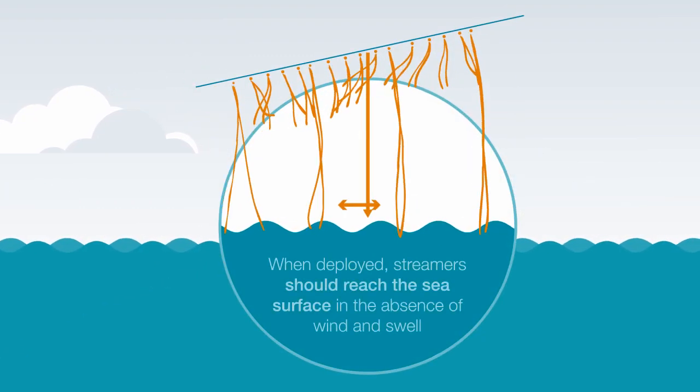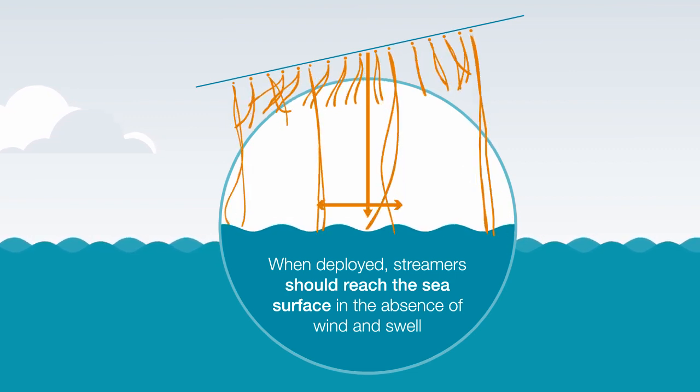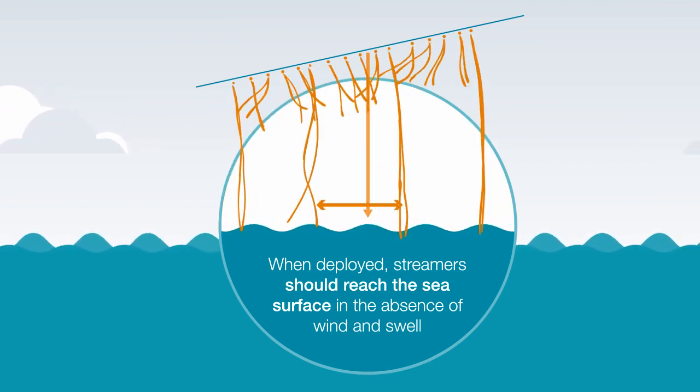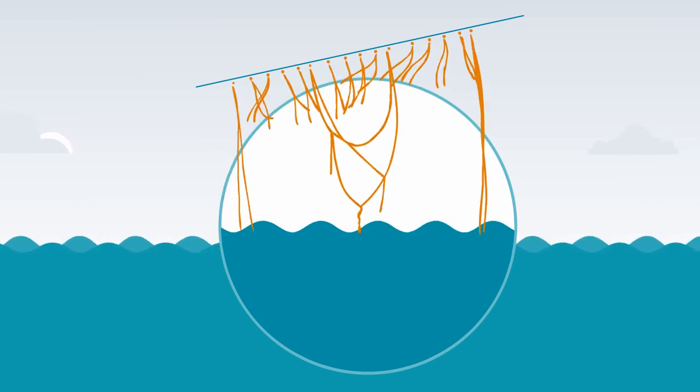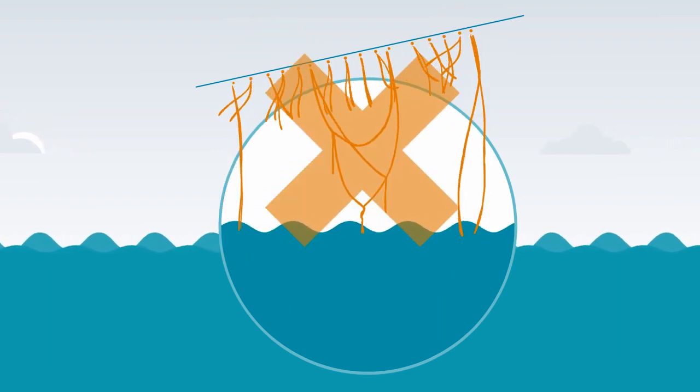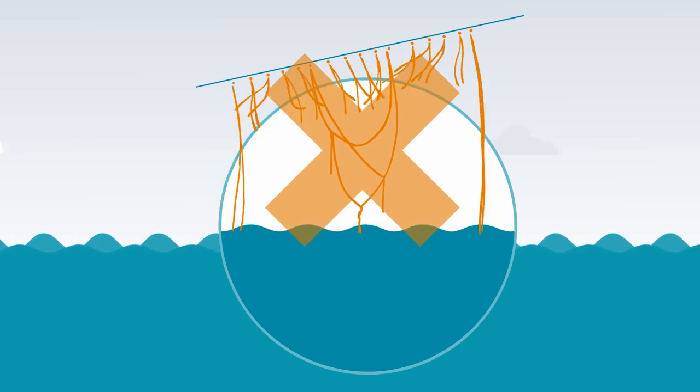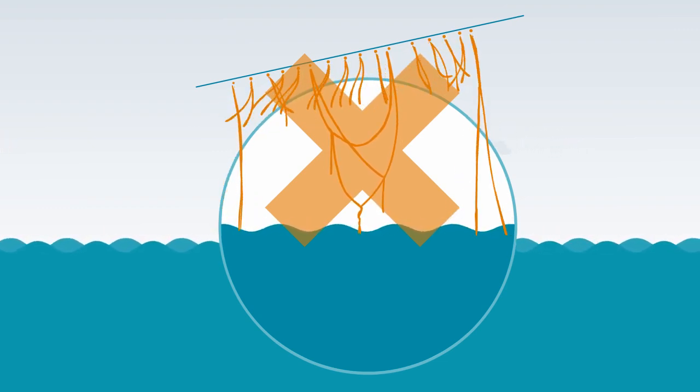The length and spacing of streamers are important factors in keeping seabirds away from fishing gear. Streamers should not become tangled, either with each other or the tory line. Attaching streamers to the tory line by a swivel allows free movement and will reduce the chance of tangling.